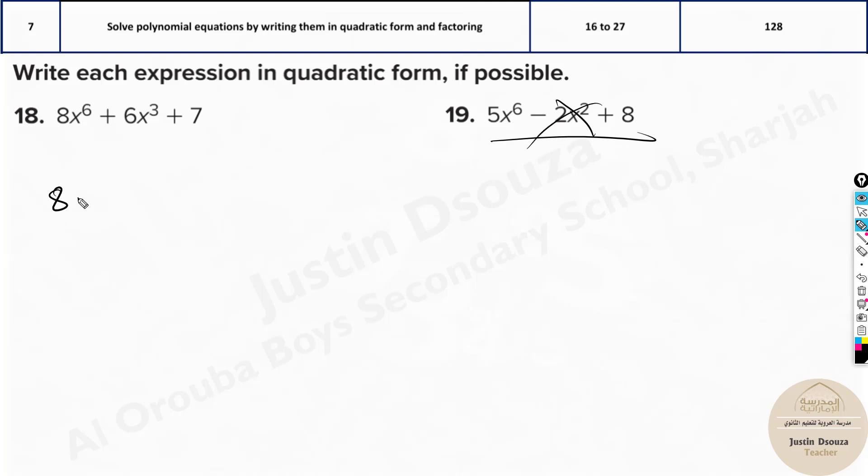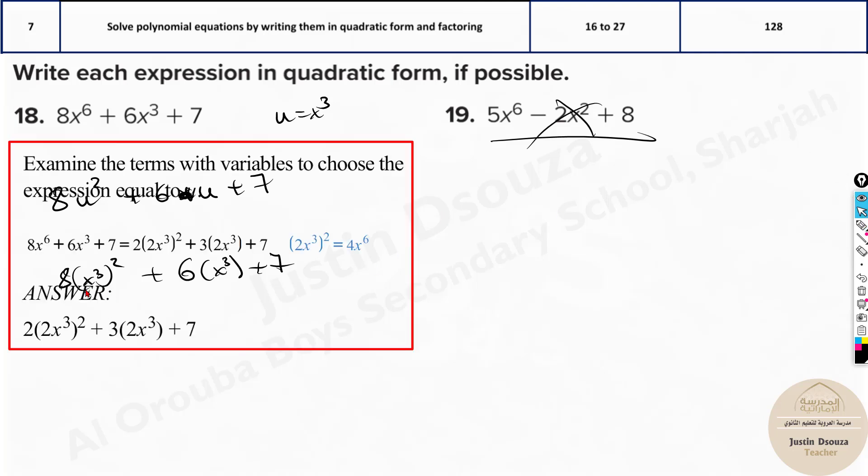But this is possible. I will write u² + 6u, not x, u + 7. Now u is considered to be x³. So I'll write it as (x³)² + 6(x³) + 7. Now here, let me write it out. That's the answer.